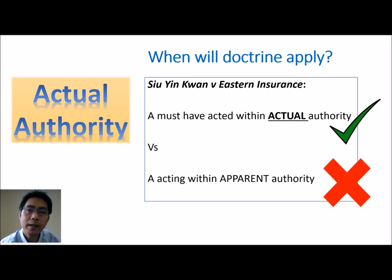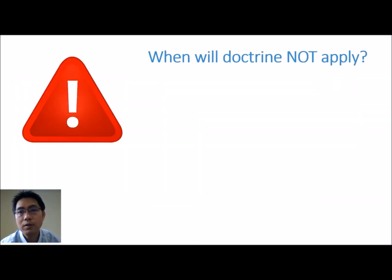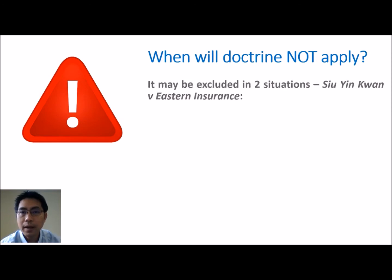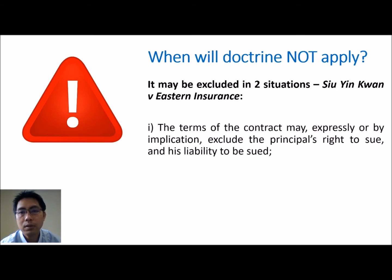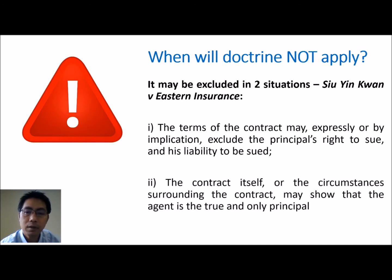The main focus in examination — and what is often confusing — are the exceptions: when will the doctrine not apply? In the same case of Su Yin Kwan, the court laid out two situations. Firstly, where the terms of the contract expressly or by implication exclude the principal's right to sue. Secondly, where the contract itself or its circumstances show that the agent is the true and only principal.